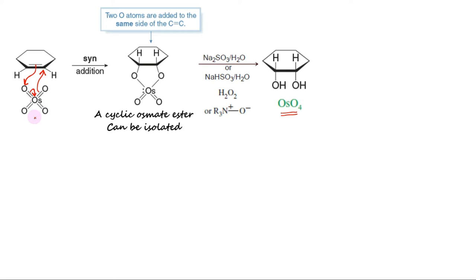A cold, dilute solution of potassium permanganate also hydroxylates alkenes with syn-stereochemistry, with slightly reduced yields in most cases. Like osmium tetroxide, permanganate adds to the alkene double bond to form a cyclic ester, a manganate ester in this case.